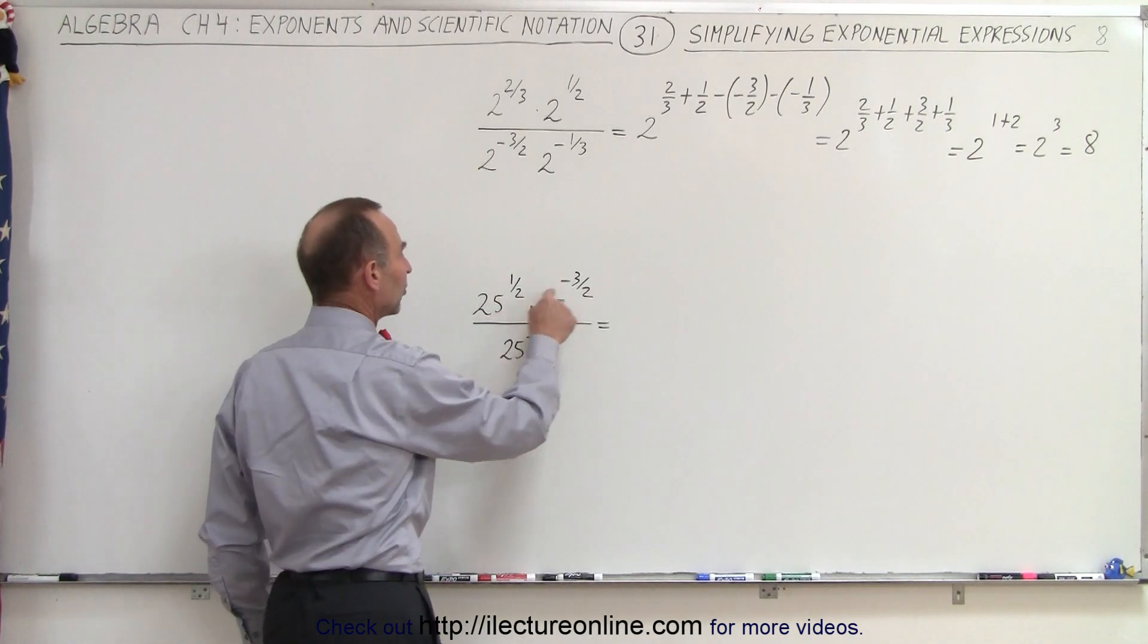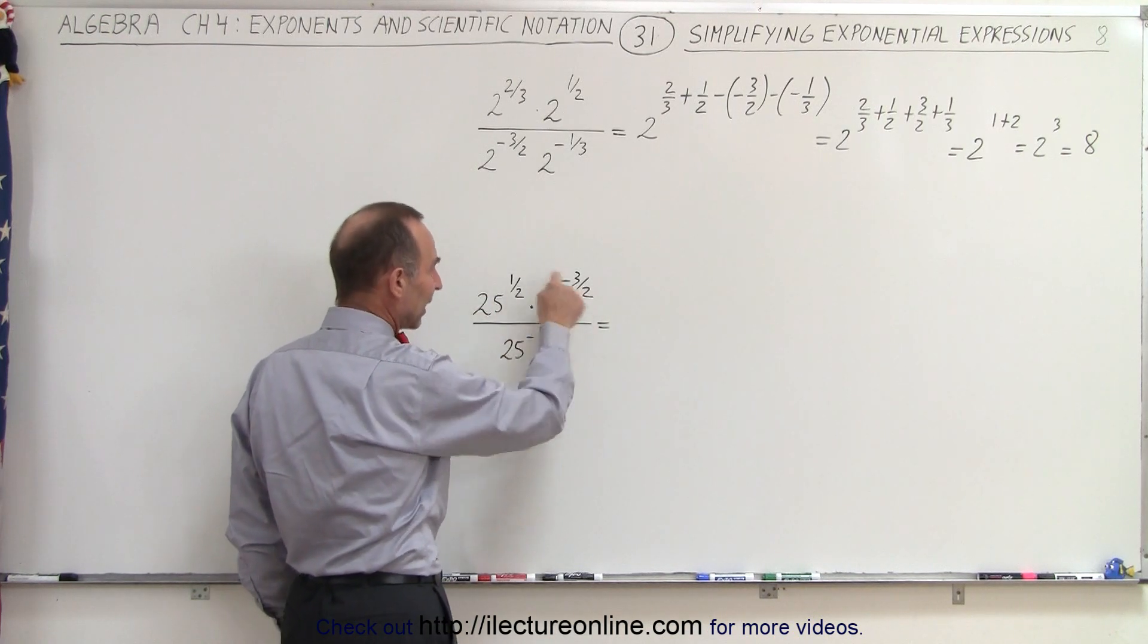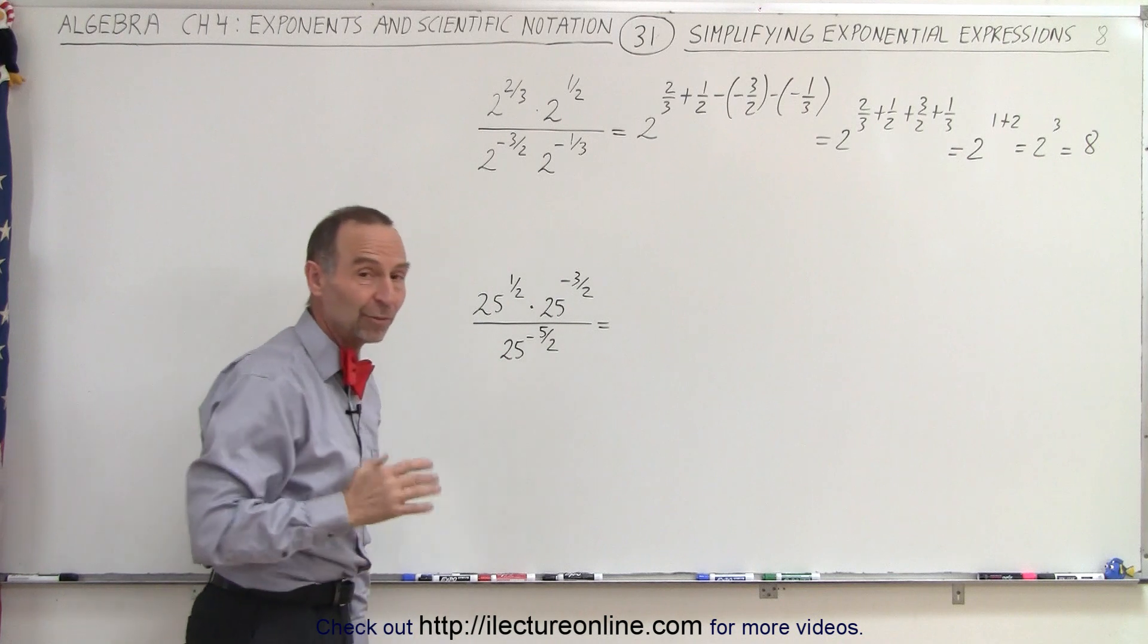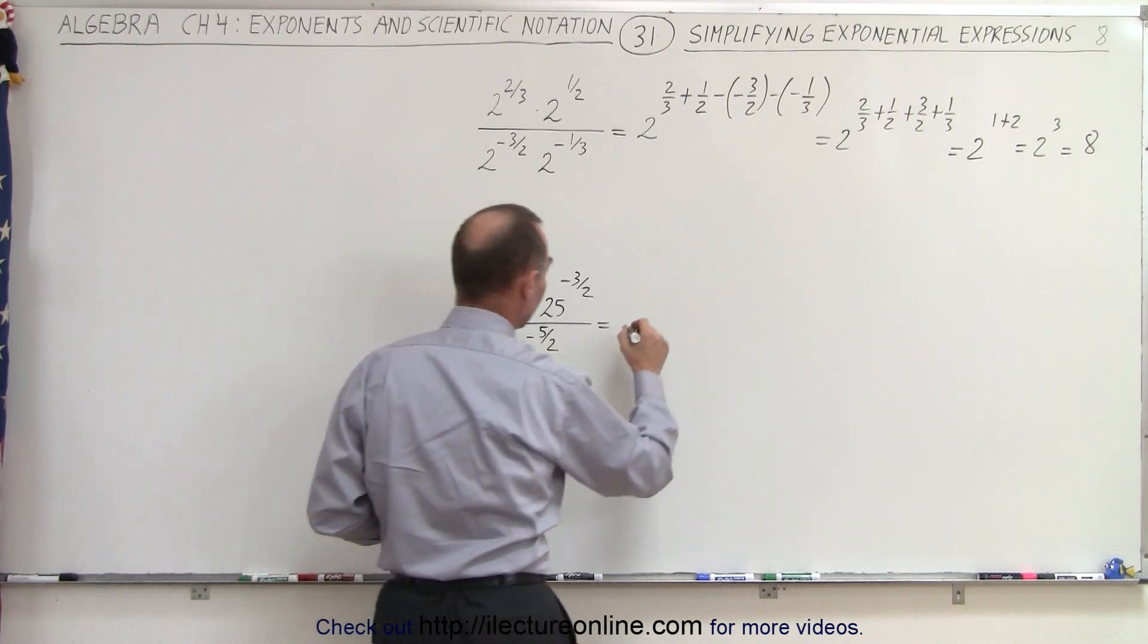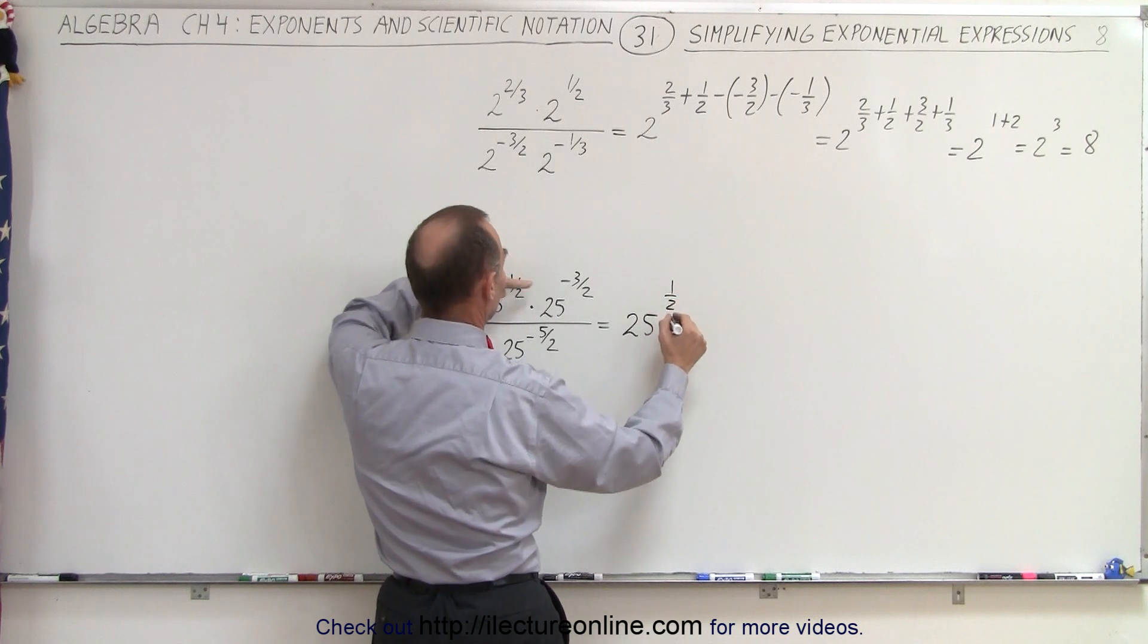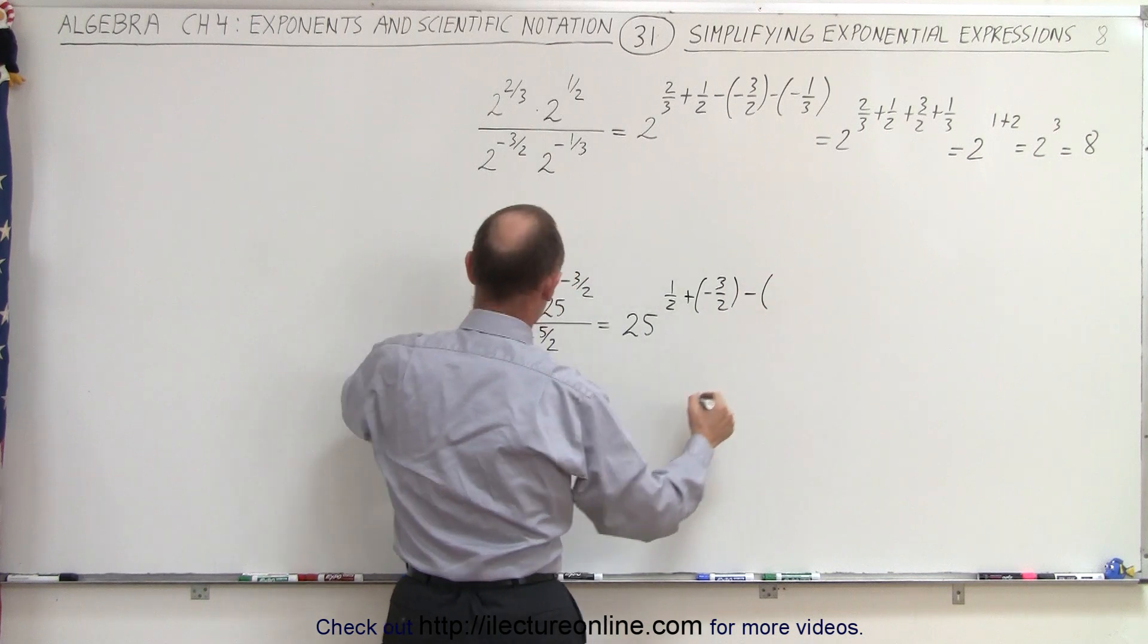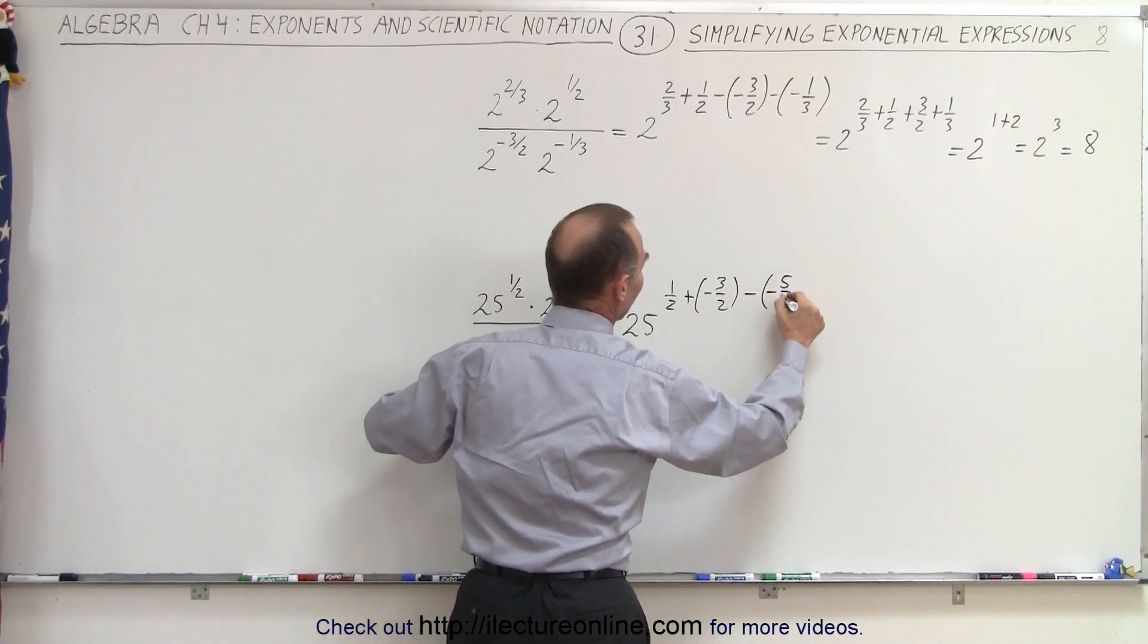Notice in this case, all denominators are the same. We just have to use the rule that when we multiply, we add exponents. When we divide, we subtract exponents. So this will look as follows: 25 raised to the 1 half power plus a negative 3 halves and minus a negative 5 halves.